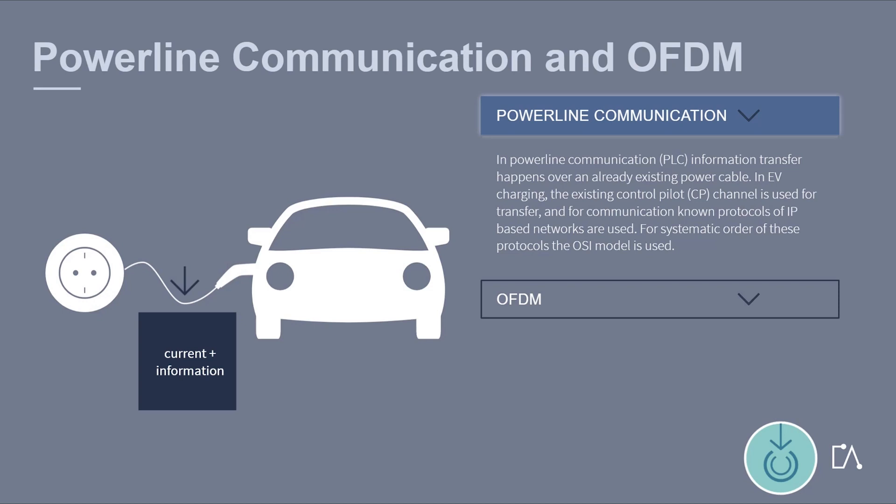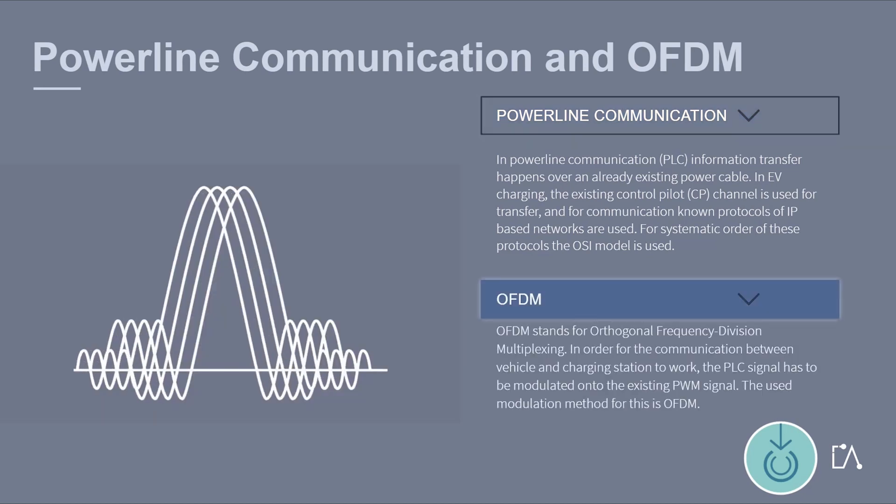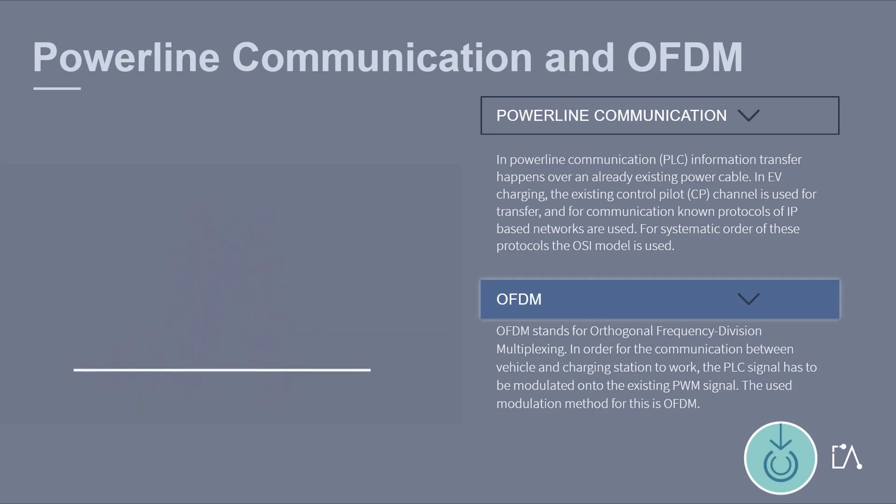In EV charging, the existing control pilot channel is used for transfer, and known protocols of IP-based networks are used for communication. For systematic ordering of these protocols, the OSI model is used. OFDM stands for orthogonal frequency division multiplexing.